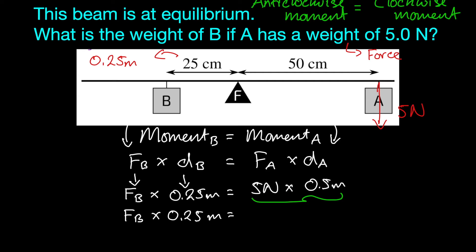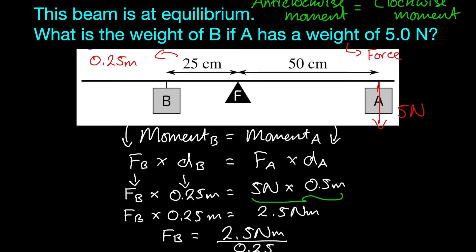We'll get 2.5 Nm. Then we're going to solve for FB and rearrange that equation. FB, which is the force of B, is equal to 2.5 Nm divided by 0.25 meters.